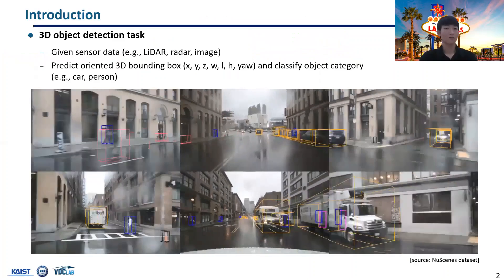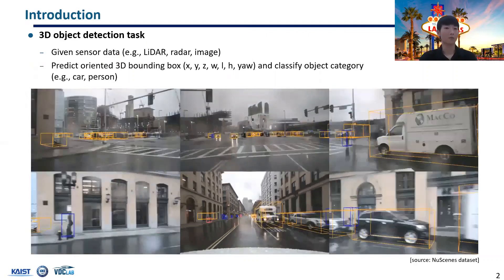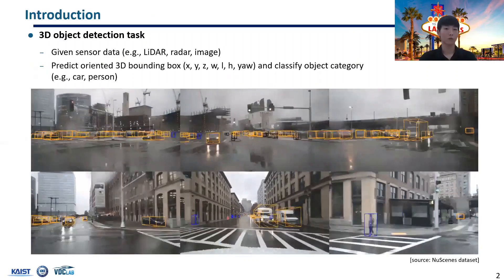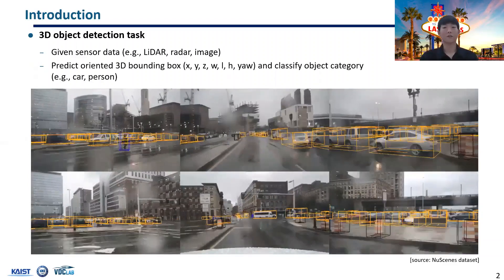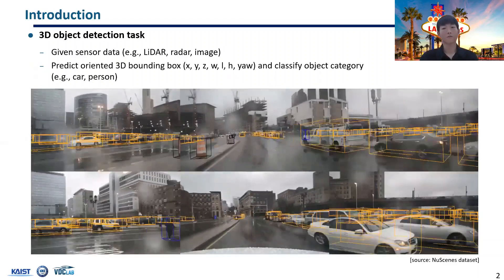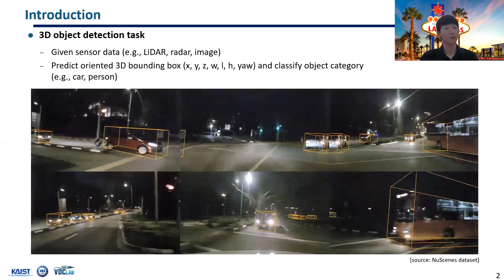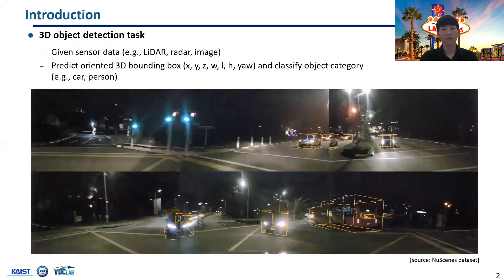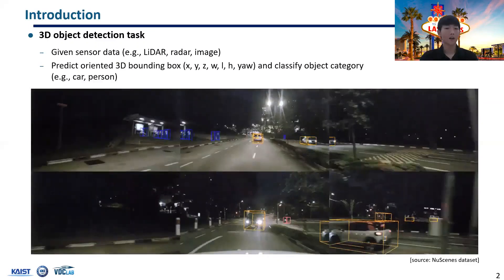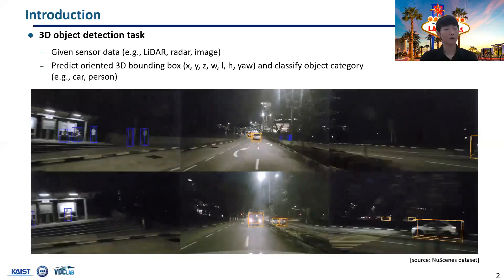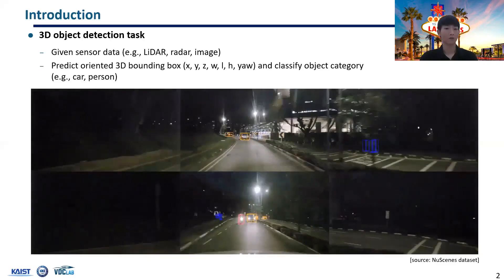3D Object Detection plays an important role in understanding the surrounding environment in many applications such as robotics or autonomous vehicles. It is the task to predict oriented 3D bounding boxes of objects, which consists of XYZ position, size, and orientation in the vehicle coordinate system. At the same time, we have to classify the category given sensor data such as LiDAR, radar, or camera image.